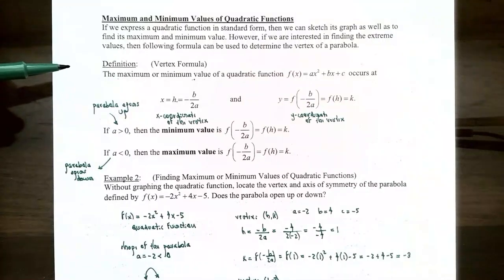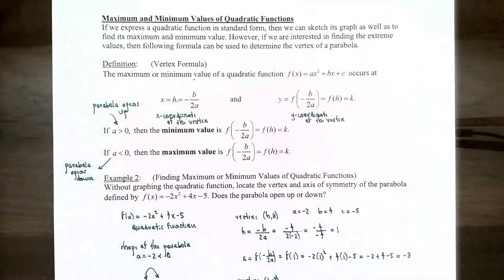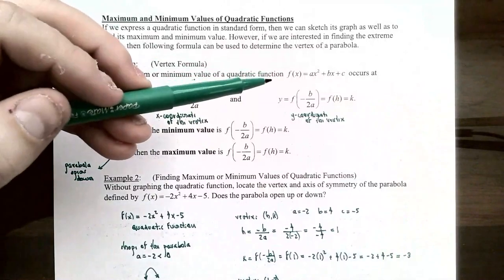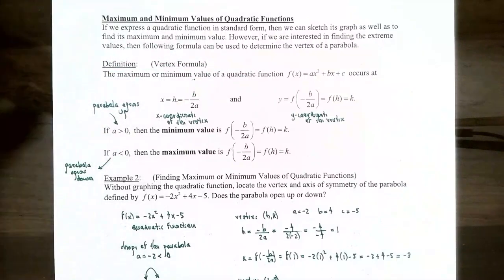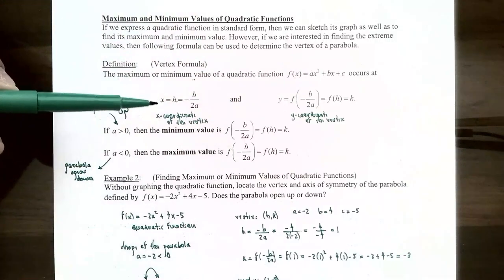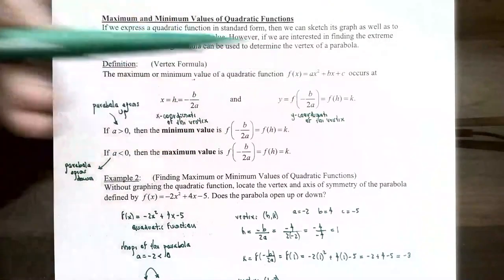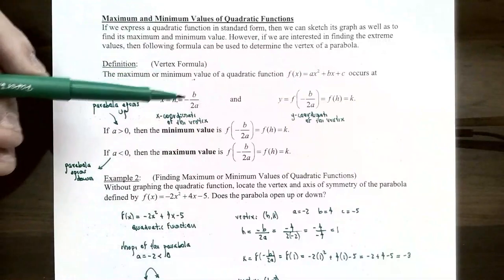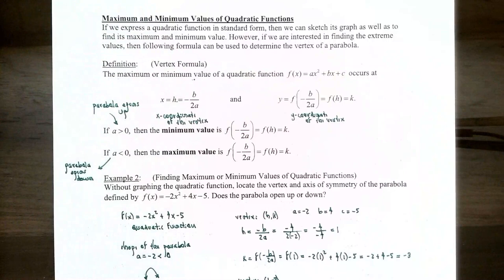This is the definition of the vertex formula. The maximum or minimum value of a quadratic function written as f(x) = ax² + bx + c — not standard form, just a general quadratic — occurs at x equals h, the x-coordinate of the vertex. That is equal to negative b divided by 2a, where b is the coefficient of the x term and a is the coefficient of the x squared term.